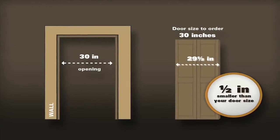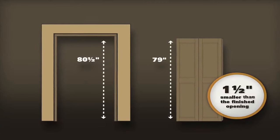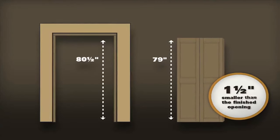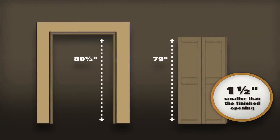Bifold doors must be one and a half inches shorter in height than the finished opening. This space is necessary for both the opening clearance and installation of hardware, rail, and pivot hinges.